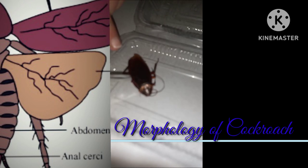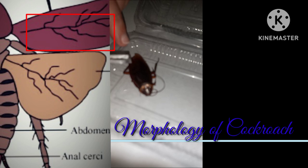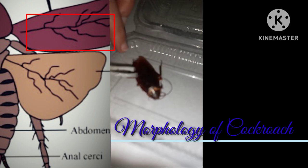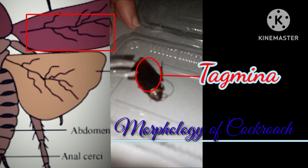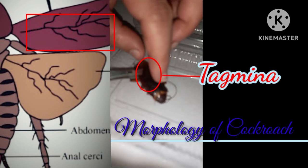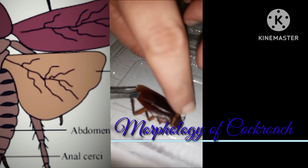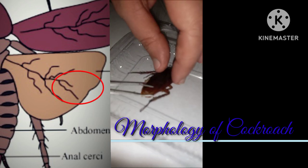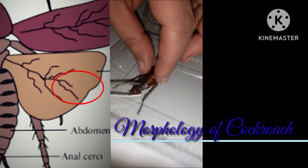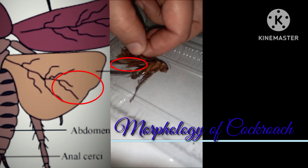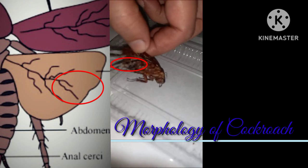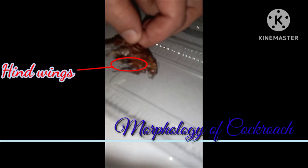The outer wings are dark, thick, stiff, and leathery. They are used for protection purposes and are also known as tegmina. Under the tegmina there are hind wings — a pair of large membranous transparent wings that are used for flight purposes.